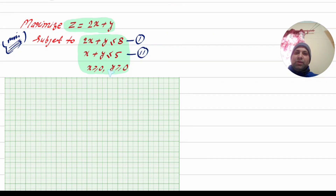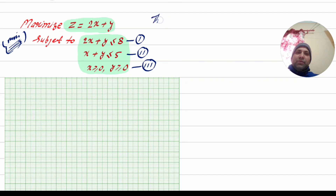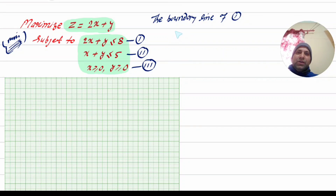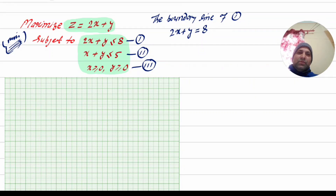Inequality one, inequality two. We have the inequalities and the plot. The first inequality is less than or equal to 8. The boundary line of the first inequality is less than or equal to 8.